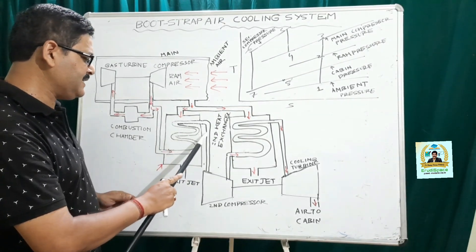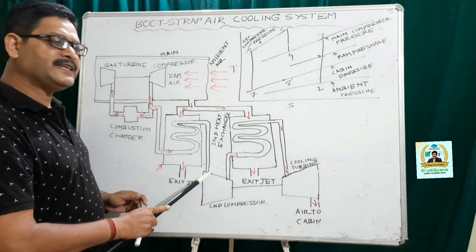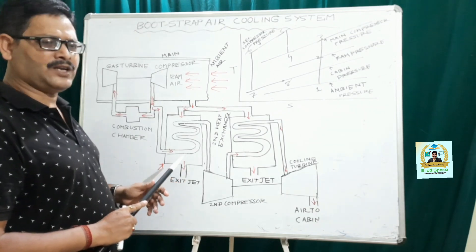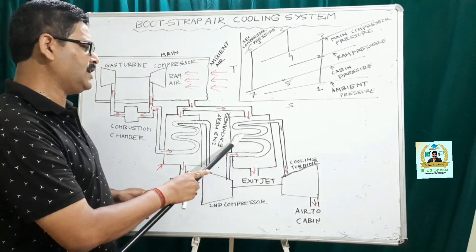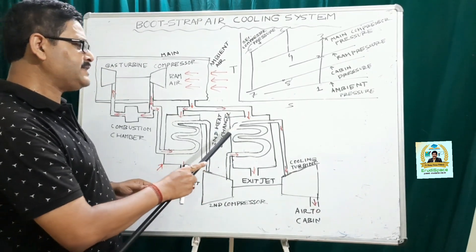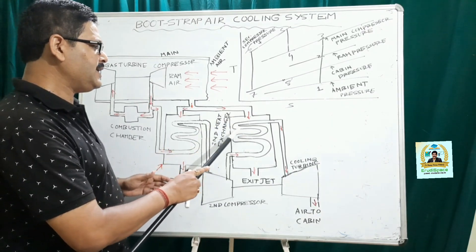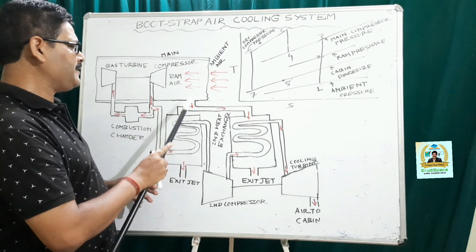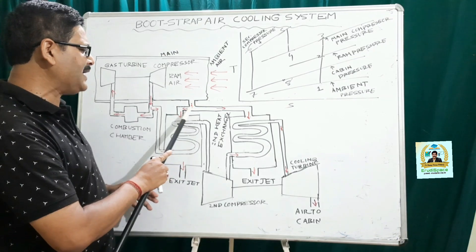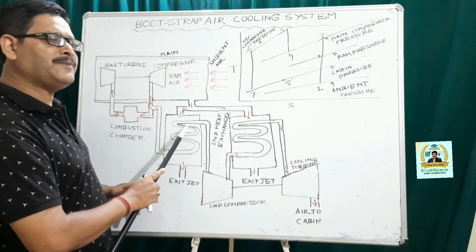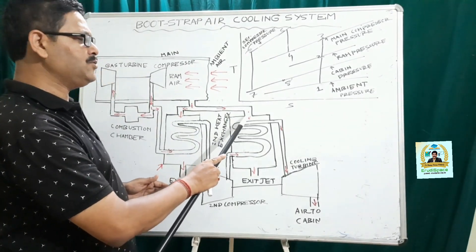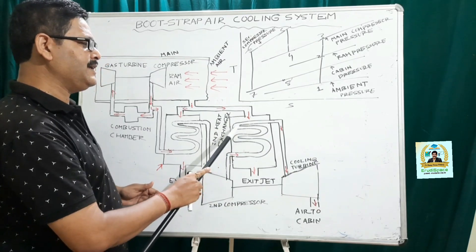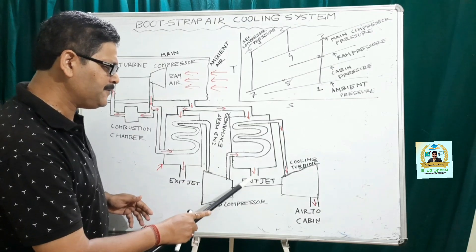Then this air is taken to the second compressor where it is further compressed. The second compressor is provided to raise the pressure of the air. Then this enters the second heat exchanger, where the air is cooled by a fraction of the ram air. Out of the total ram air, part of it is used to cool the air in the first heat exchanger and the second part is used to cool the air in the second heat exchanger. After transferring heat to the ram air, it is further cooled and the ram air lifts through the exit jet.